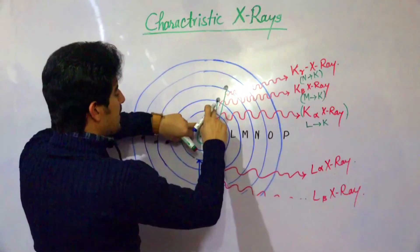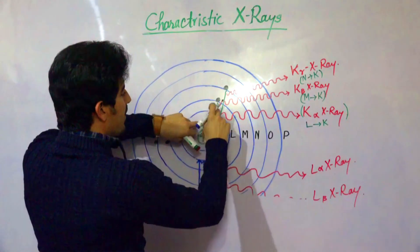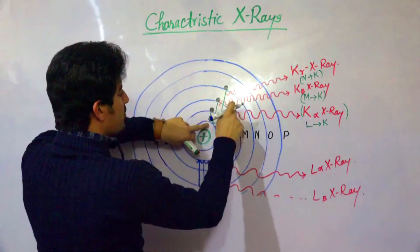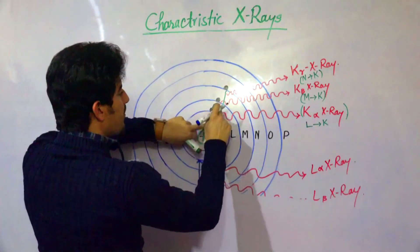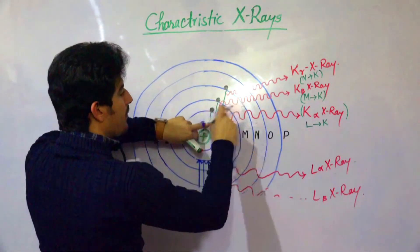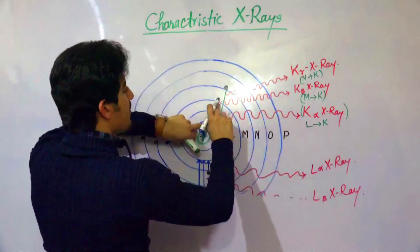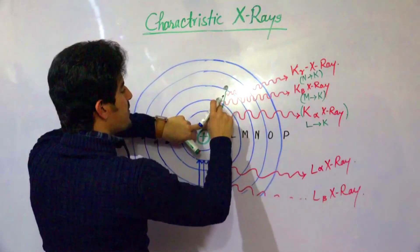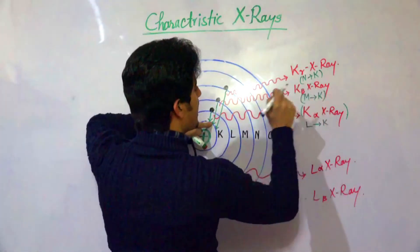Within the K-series, when an electron comes from the L-shell to the K-shell, we get K-alpha X-ray with a certain energy. When an electron comes from the M-shell to the K-shell, we get K-beta X-ray.